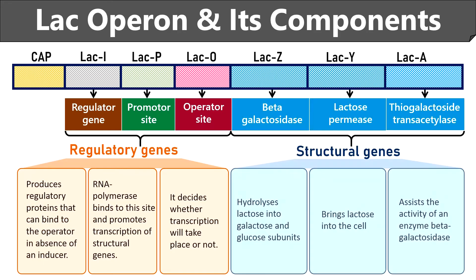Then lacZ, lacY, and lacA are the structural genes of the lac operon. LacZ gene encodes an enzyme beta-galactosidase that hydrolyzes or breaks down a disaccharide lactose into simpler glucose and galactose subunits. LacY gene encodes an enzyme lactose permease that is found in the cell membrane of an E. coli cell. Its main function is to transport lactose into the bacterial cytoplasm. Then lacA gene encodes for an enzyme thiogalactoside transacetylase that controls the activity of beta-galactosidase by transferring acetyl group from coenzyme A to the hydroxyl group of galactosides. However, its function in the lac operon system is still unknown.